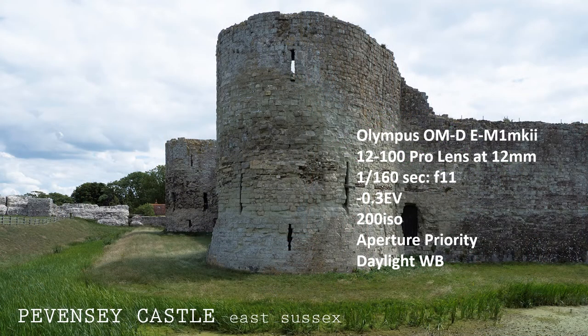This shot of Pevensey Castle is a snap, because the sky is overexposed. The castle walls required more exposure because they were not sunlit. The camera metering has exposed for the walls, but because of the wide dynamic range of the composition, the sky is rendered overexposed.